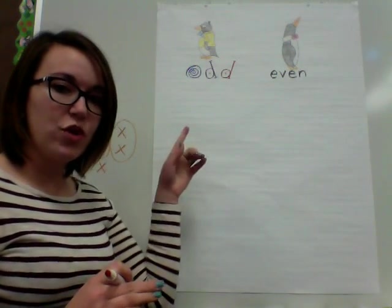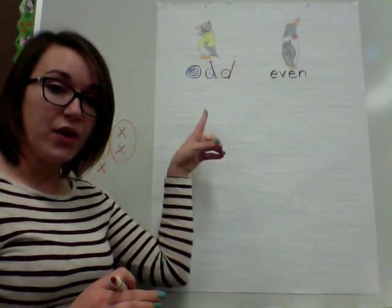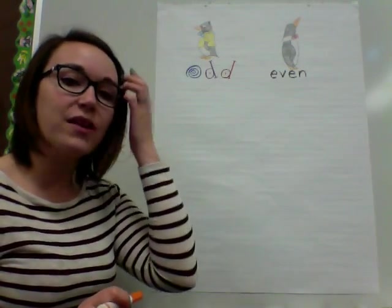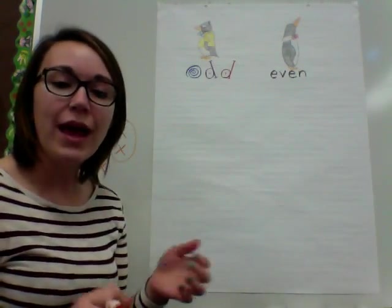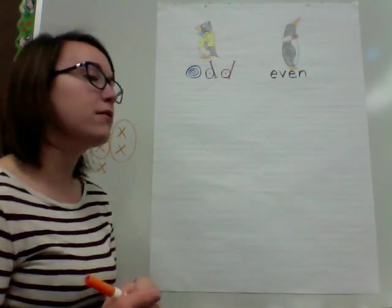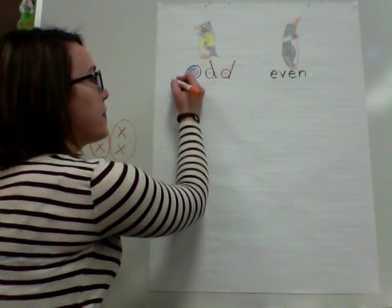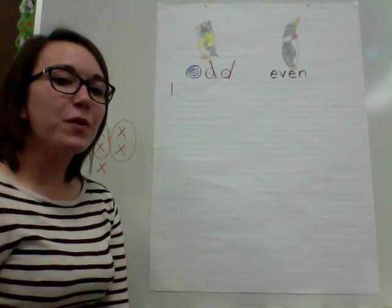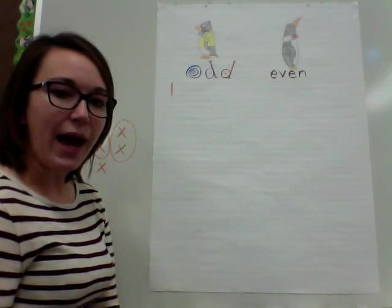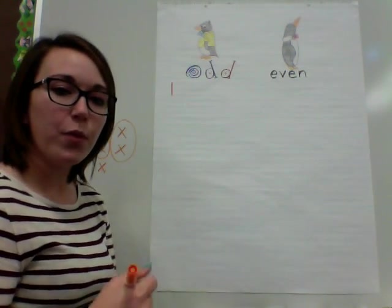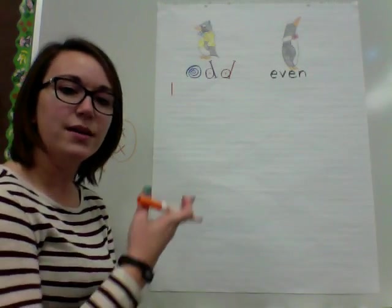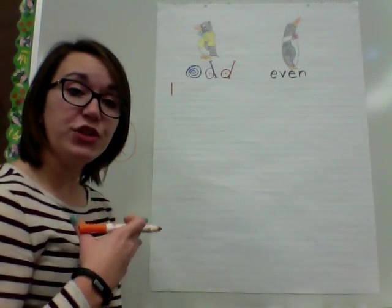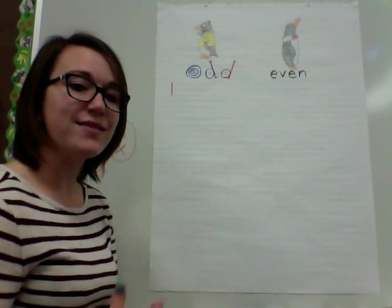What we are going to do is start with the number one over here on the odd side where we see Tacky, because Tacky was an odd bird and he was left out of a lot of things. We're going to write the number one, and then after we write that, we're going to draw a dot. For every number we write, if I draw the number one then I'm going to draw one dot; if I draw the number two I draw two dots, and we'll progress that way.